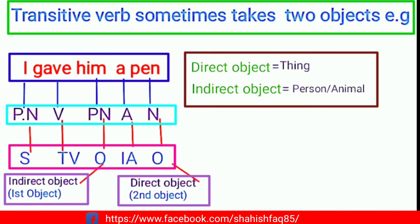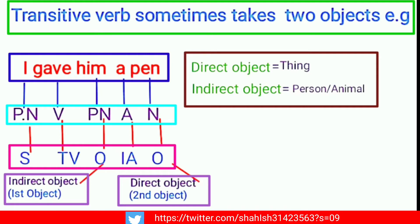In the sentence 'I gave him a pen,' 'pen' is the direct object, and 'him' is the indirect object. The direct object refers to things, while the person or animal is the indirect object. So 'pen' is the direct object and 'him' is the indirect object.